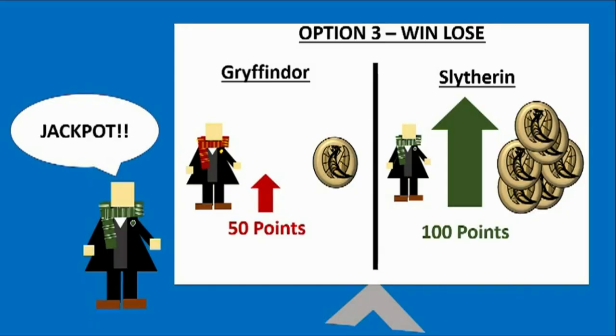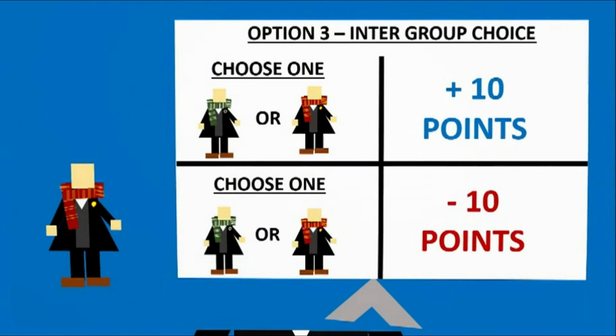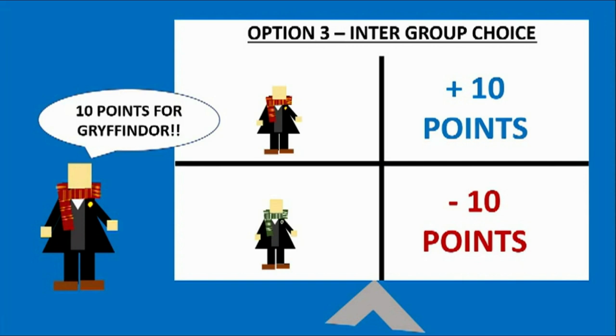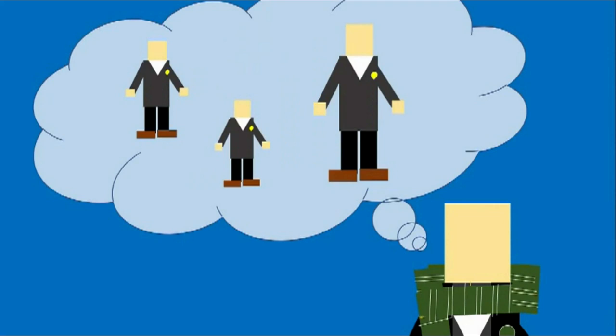So did the boys discriminate against one another? In the first experiment, the boys chose option three, allocating positive points to members of their own group and negative points to members of the other group — meaning discrimination was evident. In the second experiment, the boys also chose option three, the win-lose situation, allocating the maximum points to their own group and the smallest to the other group. This was significant because the boys discriminated even though they were from the same school house, knew each other well beforehand, and some even knew their friends would be part of the group they discriminated against.